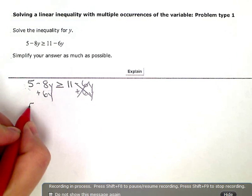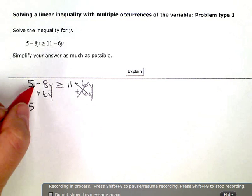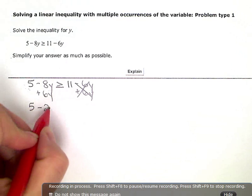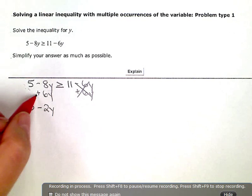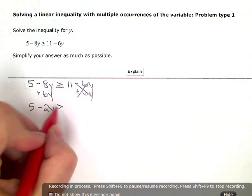And then, when I simplify, I get 5 minus 2y, negative 8 plus 6 is negative 2, is greater than or equal to 11.